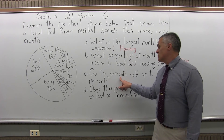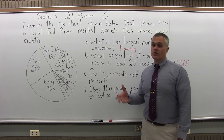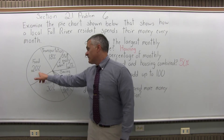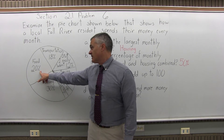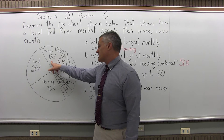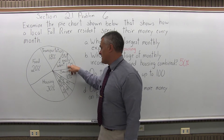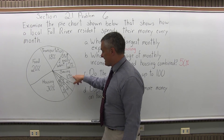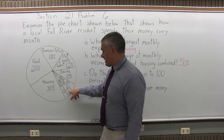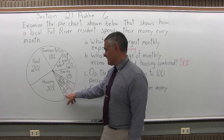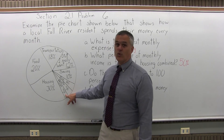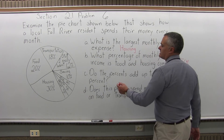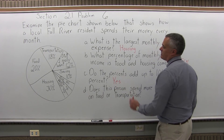Part C: do the percents add up to 100%? A good pie chart, to really be a pie chart, they have to add up to 100%. Starting with 30% plus 20% is 50%, plus 18% is 68%, plus 12% is 80%, plus 10% is 90%, plus 4% is 94%, plus 3% is 97%, and finally plus 3% is 100%. So yes, they do add up to 100%, and it's important that they do for a pie chart.